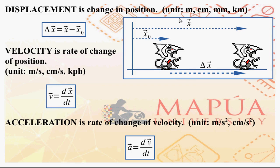The unit of displacement is a unit of length: meters, centimeters, millimeters, kilometers, inches, feet, and so on. Be able to convert from one unit to the other — from the metric system to the English system and vice versa.